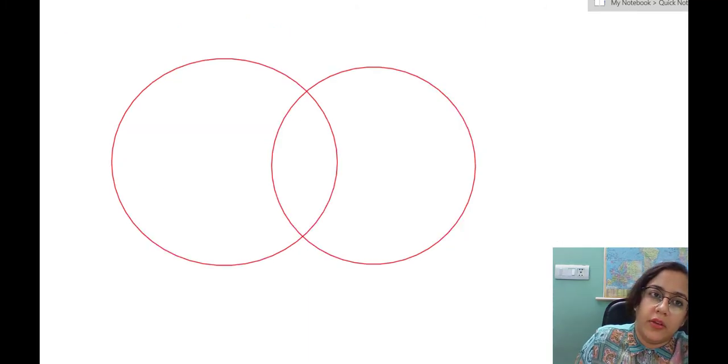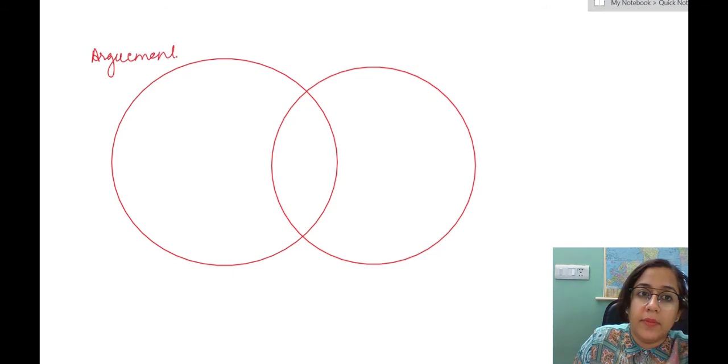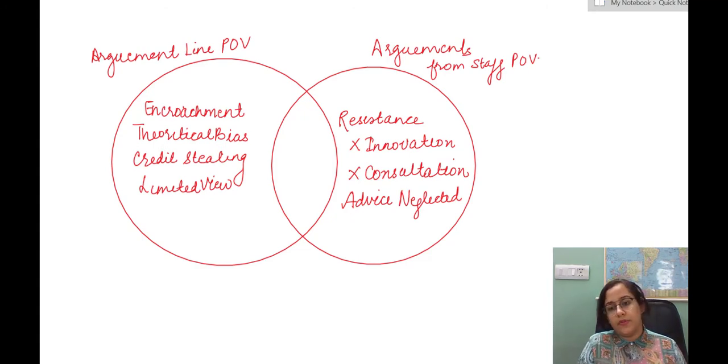For example, this is the type of diagram that you can use. Herein you can write the arguments from the line point of view and herein you can write the arguments from the staff point of view. Now from the line point of view, we can say that they argue that the staff authority is not directly responsible for the work that is performed and that is actually encroaching their authority. They also have a theoretical bias wherein they are not engaged in the performance of the work on ground.